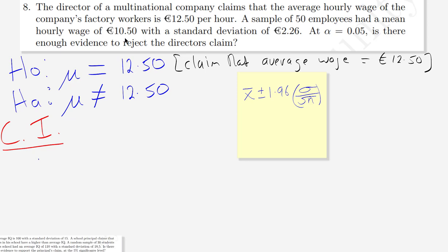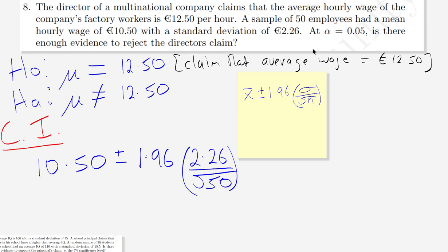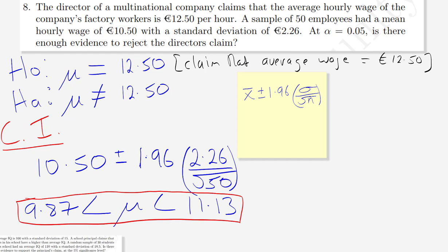x-bar is our sample mean, which was €10.50. So the confidence interval is 10.50 plus or minus 1.96 times 2.26 over the square root of 50. We put the lower bound on the left using the minus option and the upper bound on the right using the plus option. The lower bound is 9.87 and the upper bound is 11.13.